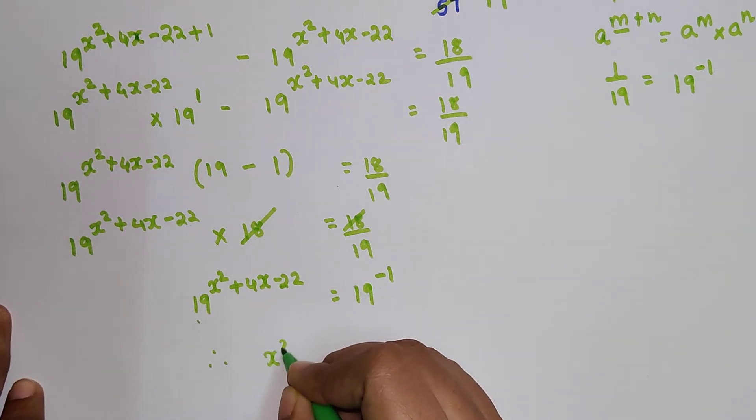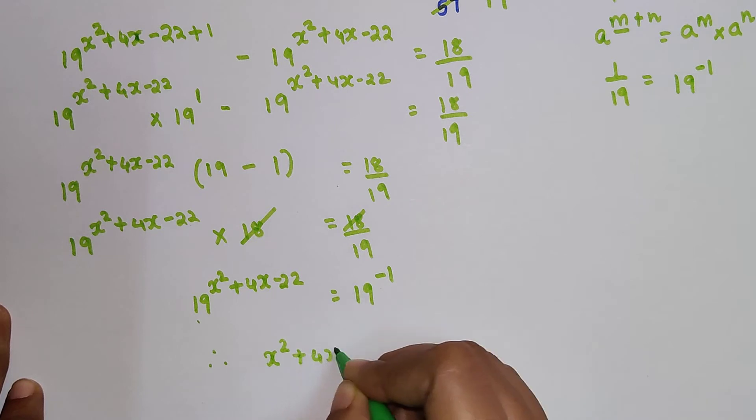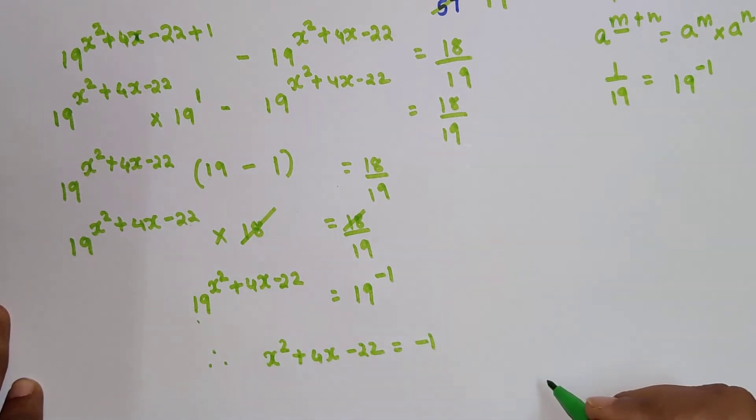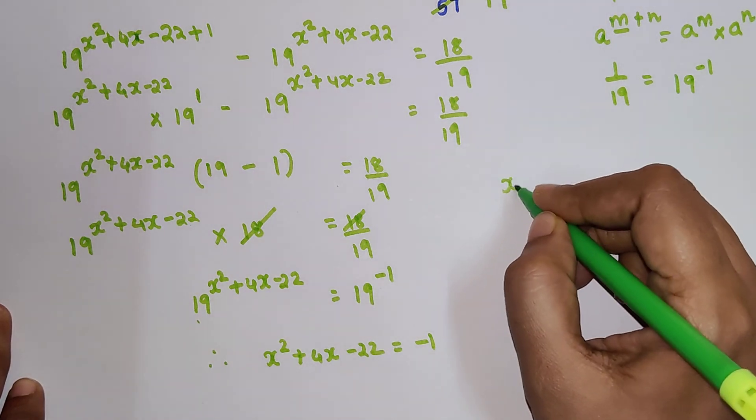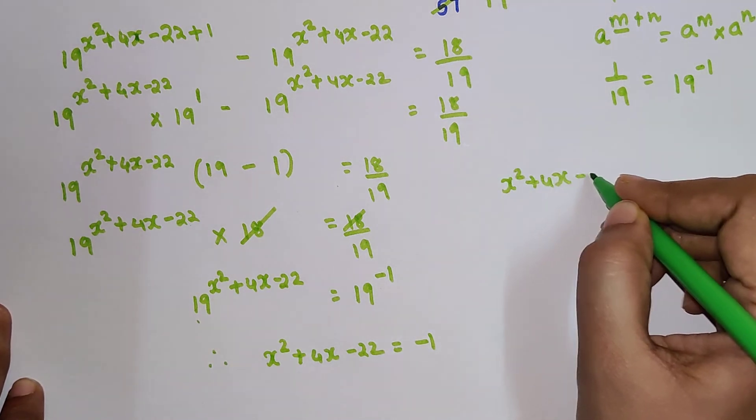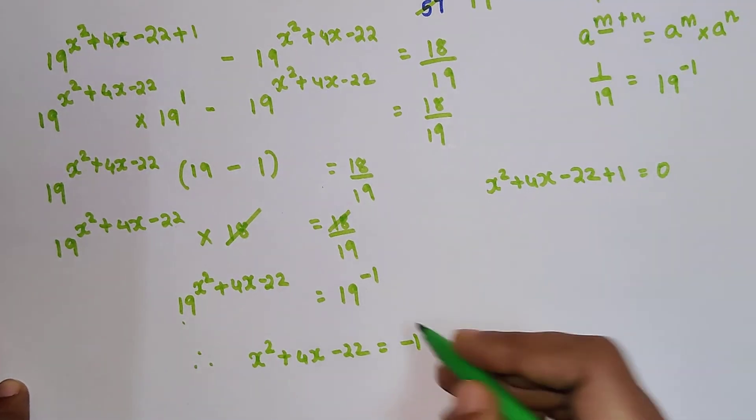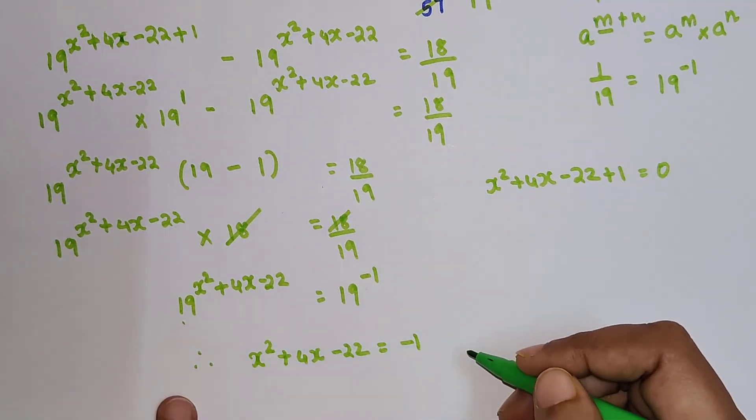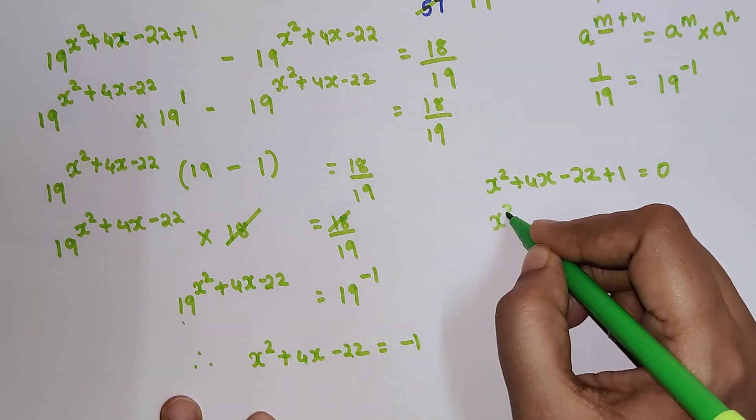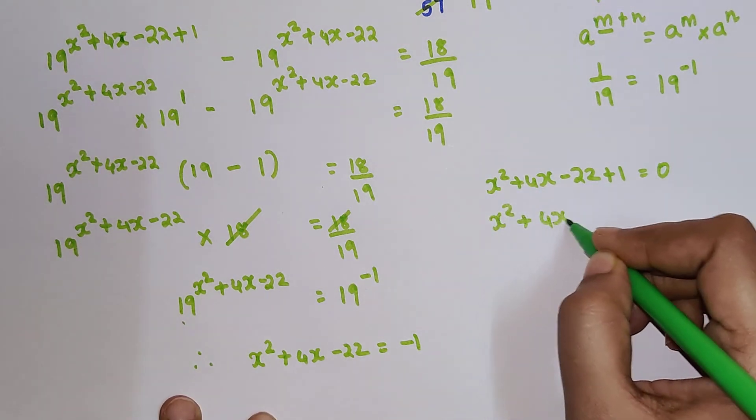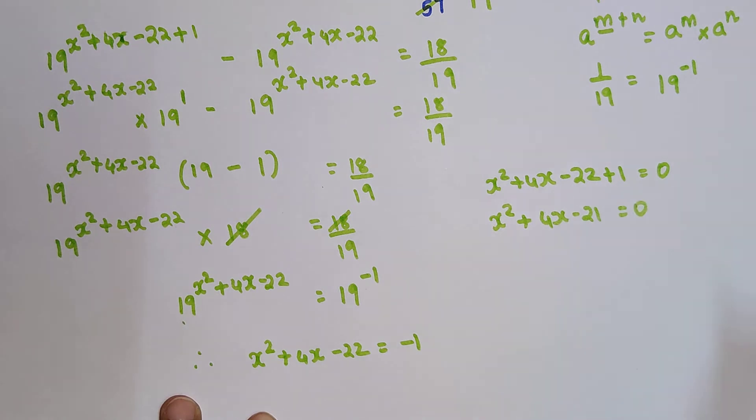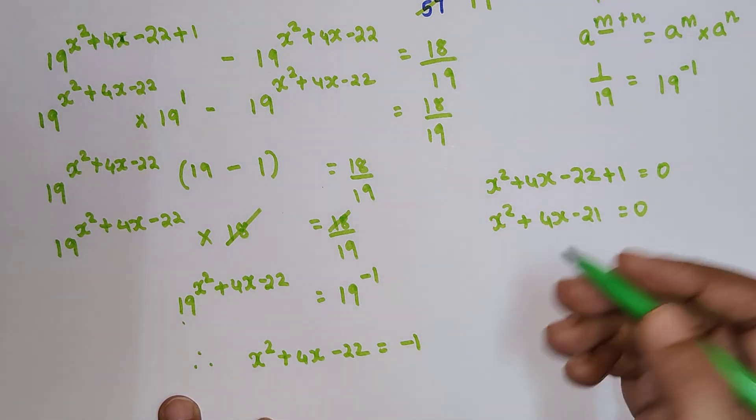So we have x²+4x-22 = -1. I can write x²+4x-22+1 = 0 by shifting the -1 to the other side. So we have x²+4x-21 = 0.